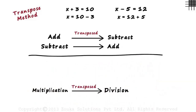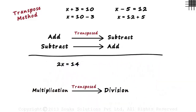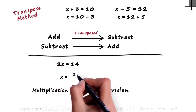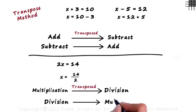Let the next equation be 2x equals 14, which we need to solve. Since our aim is to have just the variable on the left hand side, we should eliminate 2. Since 2 is multiplied on the left hand side, we transpose it and divide the right hand side by 2. We get x equal to 14 by 2. Similarly, a term that is divided on one side is multiplied when transposed to the other side.